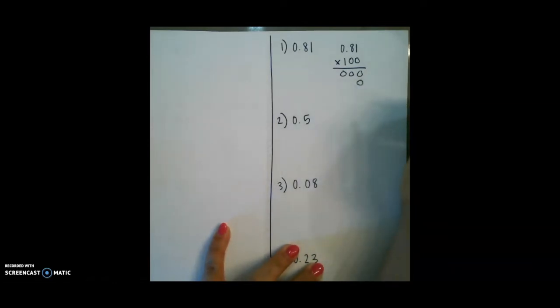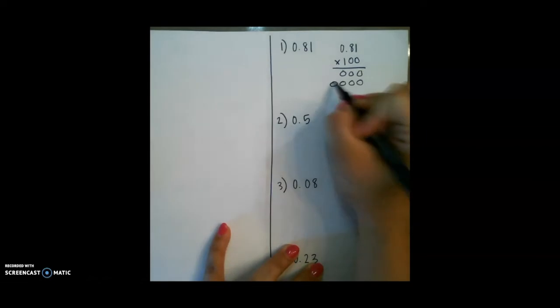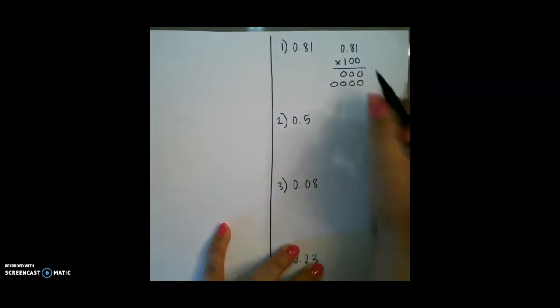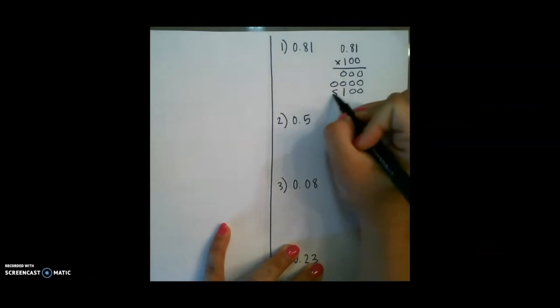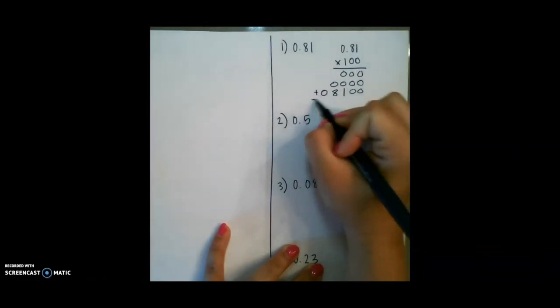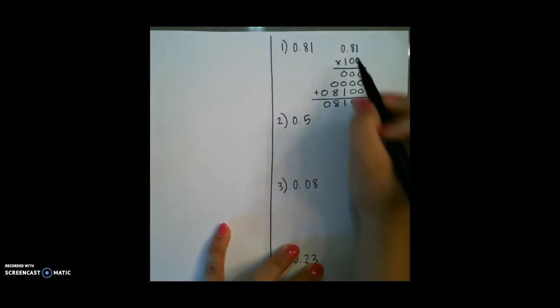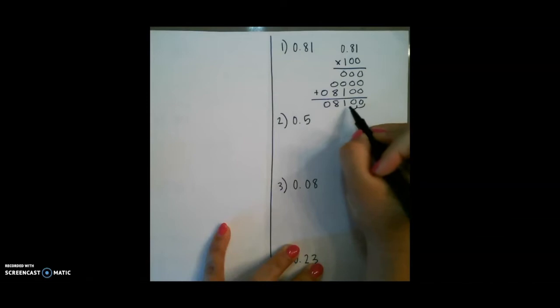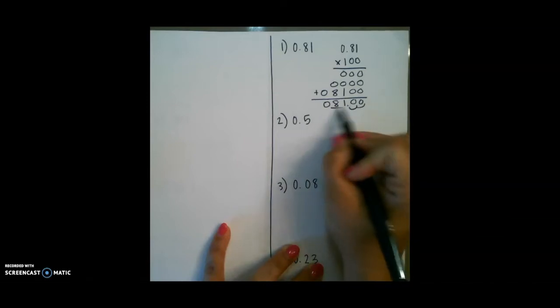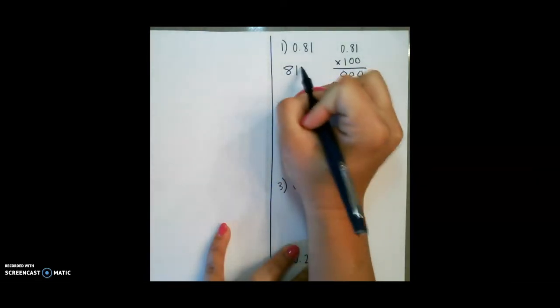Again, remember to add the placeholder 0. And again, we have another set of zeros all the way across. We then have two placeholder zeros, and we multiply one by each of these numbers. At the end, we add them all up and move the decimal to the left two places, which will then give us 81%.